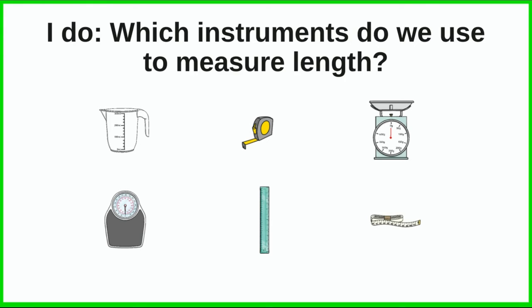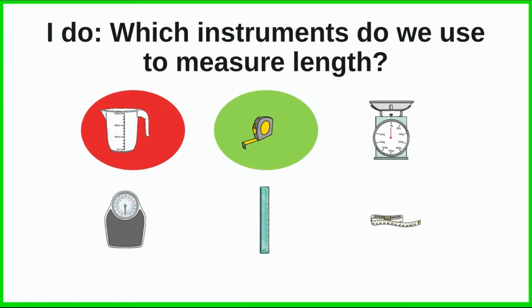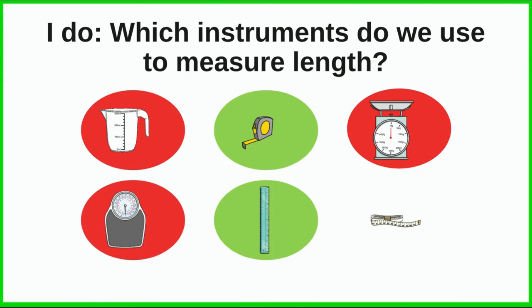The question is asking which instruments we need to measure length. When I think about length I'm thinking about distance. The measuring jug doesn't measure length — it measures capacity, how much something can fill. The scales measure weight, so it can't be those. The measuring tape — Mrs Sadler used that to measure her door, so you could use a measuring tape. A ruler we use to measure lines that we're drawing. The set of scales measures mass, not length. So we can use the measuring tape and a ruler.